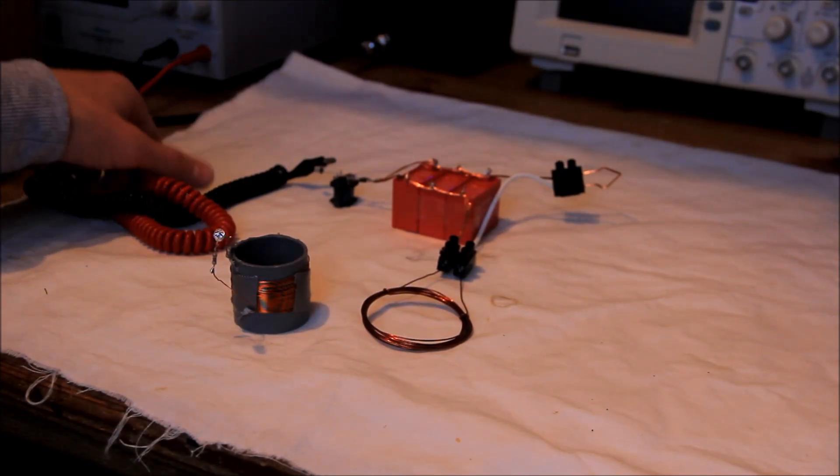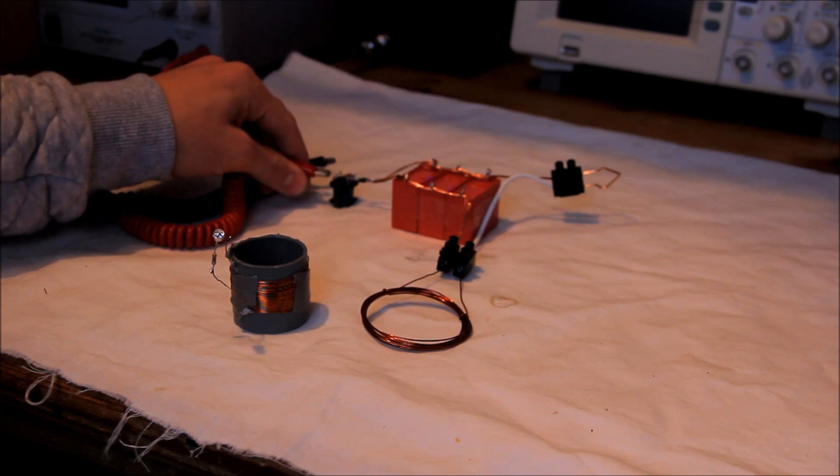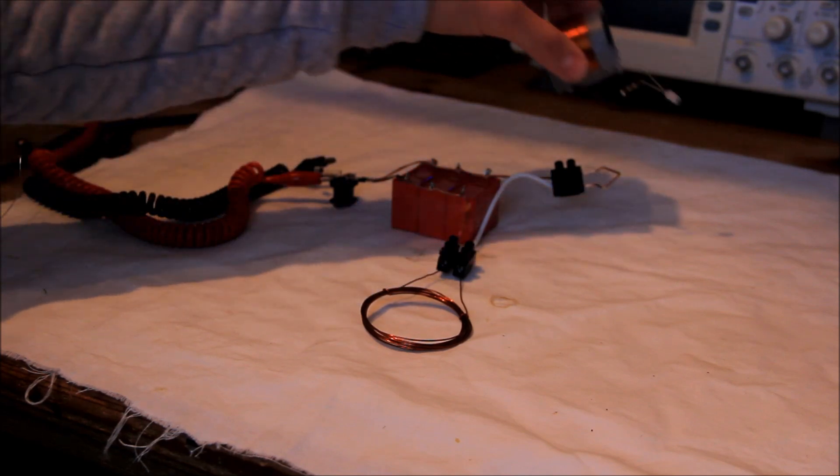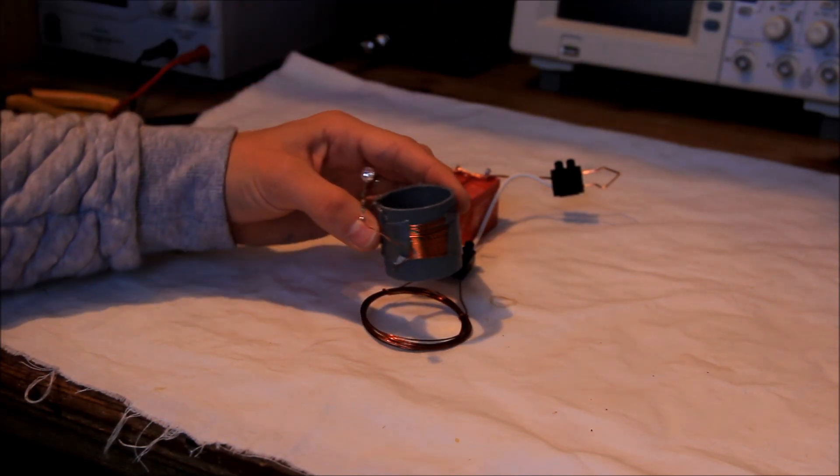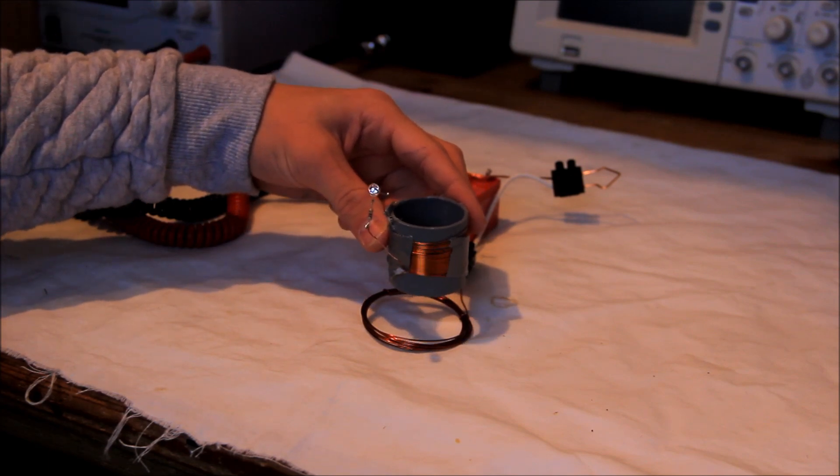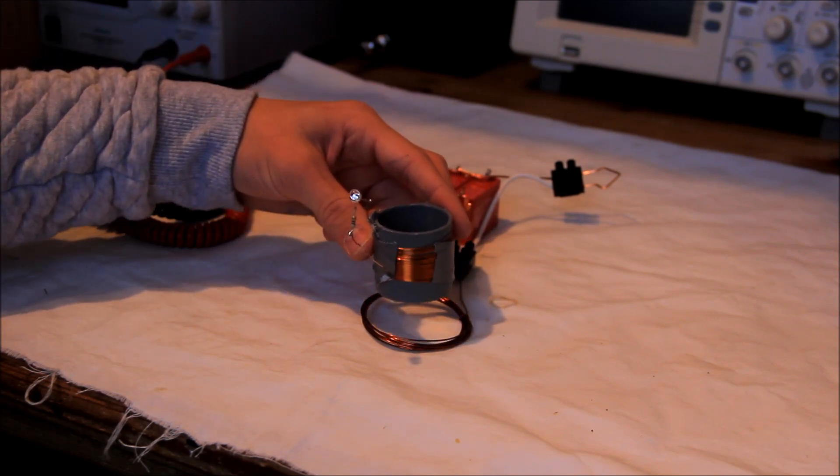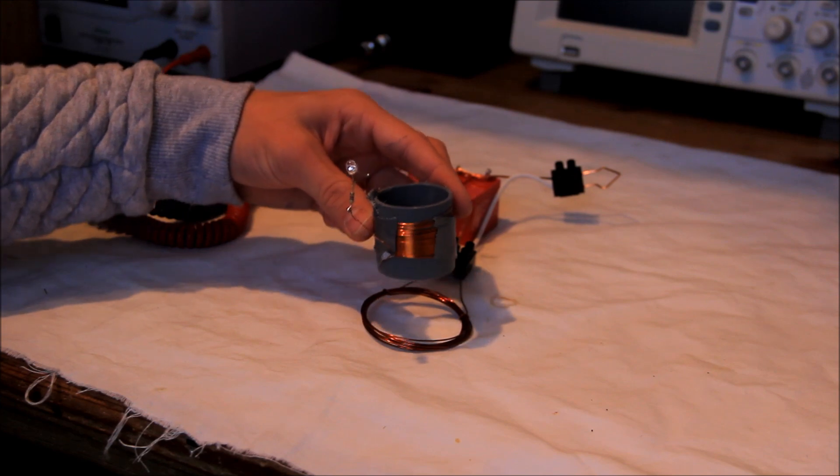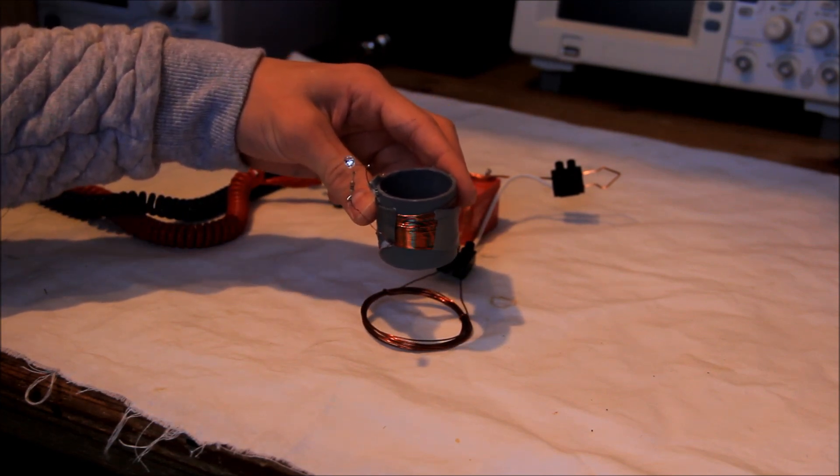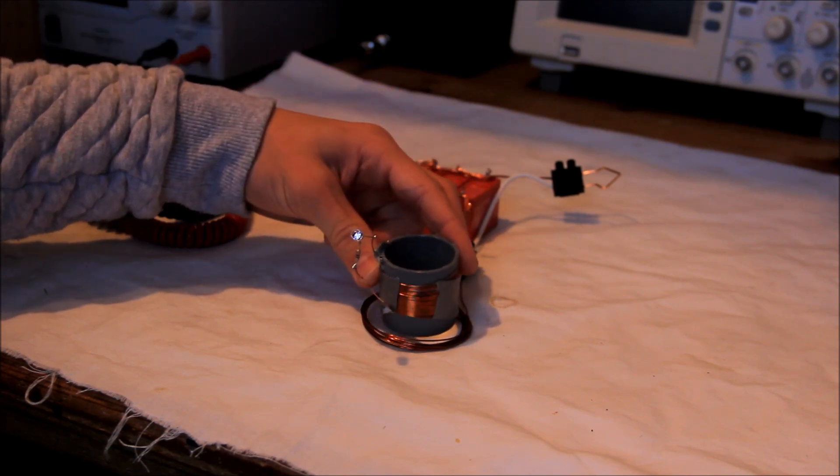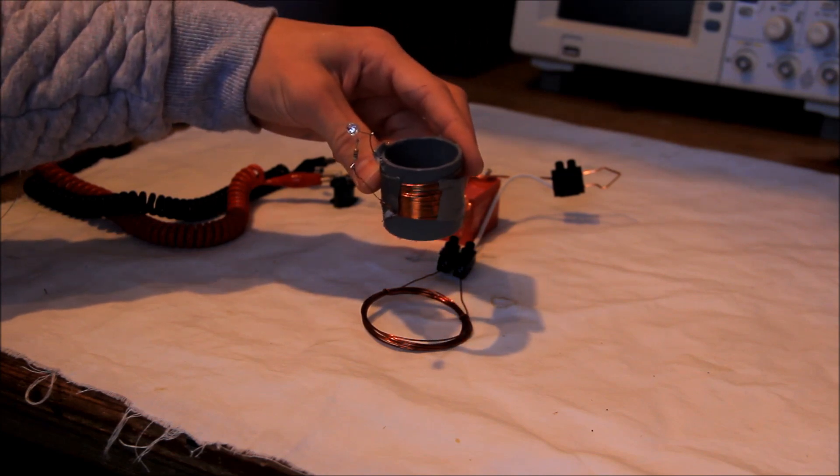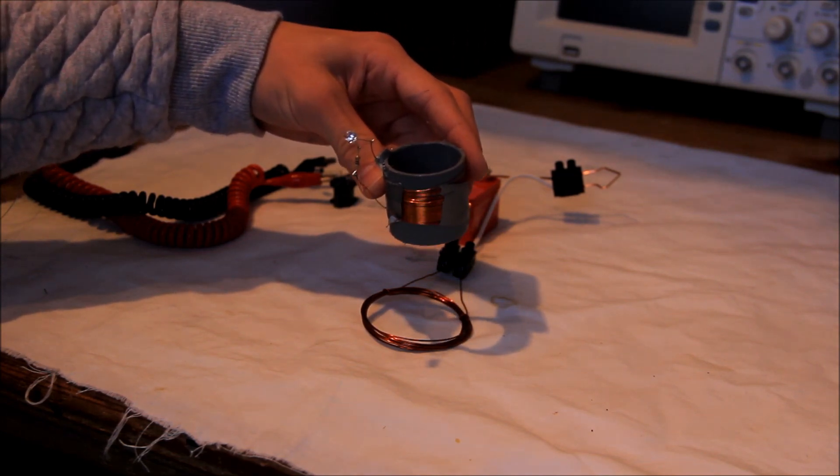Here is a small test. We make our EMP. You can see a spark on the spark gap when we test this. Every time the spark gap lights up, we have an electromagnetic pulse and our LED lights up. So we induce voltage in our coil.